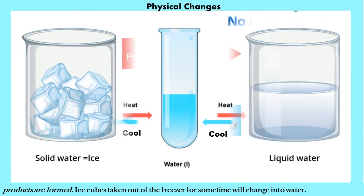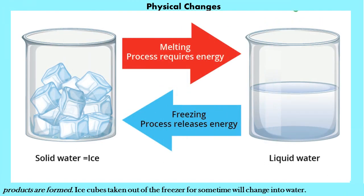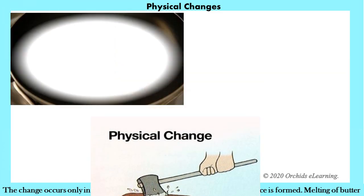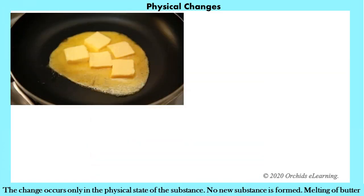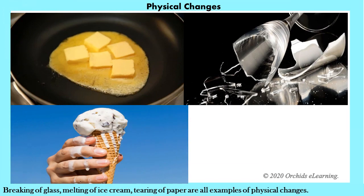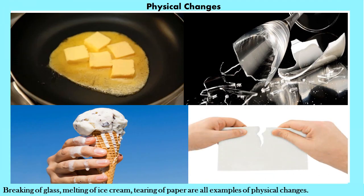For example, ice cubes taken out of the freezer for some time will change into water — the change occurs only in the physical state, and no new substance is formed. Melting of butter, breaking of glass, melting of ice cream, and tearing of paper are all examples of physical changes.